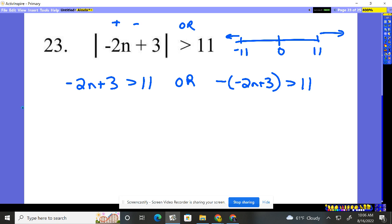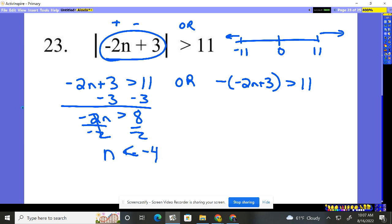We always start by looking at the positive piece, what's inside being bigger than 11. Solving this: subtract 3, subtract 3. Negative 2n greater than 11 minus 3, which is 8. Divide by negative 2. Notice that when we do this, the inequality is going to flip. My board decided to flip out here.